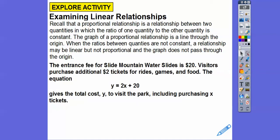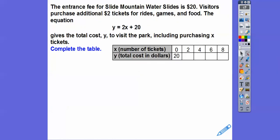The entrance fee for Slide Mountain Water Slides is $20 — you pay $20 just to get in. Visitors purchase additional tickets at $2 each for rides, games, and food. The equation y equals 2x plus 20 gives the total cost y to visit the park, including the number of tickets purchased. They give us ticket values of 0, 2, 4, 6, and 8, so we'll plug those in.